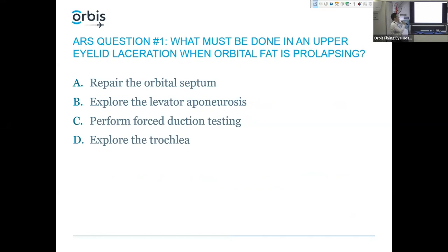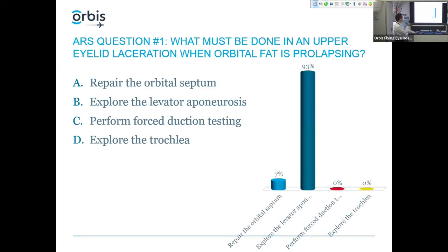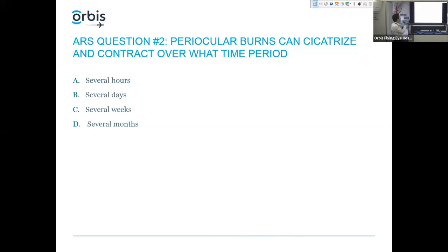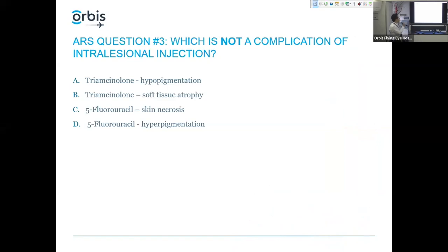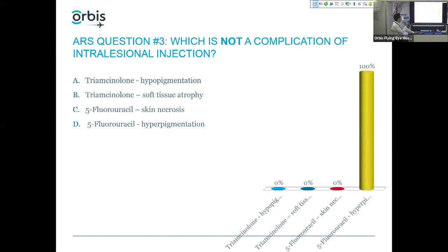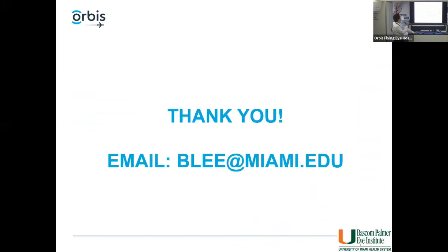Post-test answers: when orbital fat is prolapsing from an upper eyelid laceration, you should explore the levator aponeurosis — you do not need to close the orbital septum. Periocular burns can cicatrize and contract over months — it contracts over weeks but continues contracting over months. And 5-fluorouracil does not generally cause pigmentary changes in the skin, making it suitable for all skin types. Thank you very much — my email is available if you have any questions.